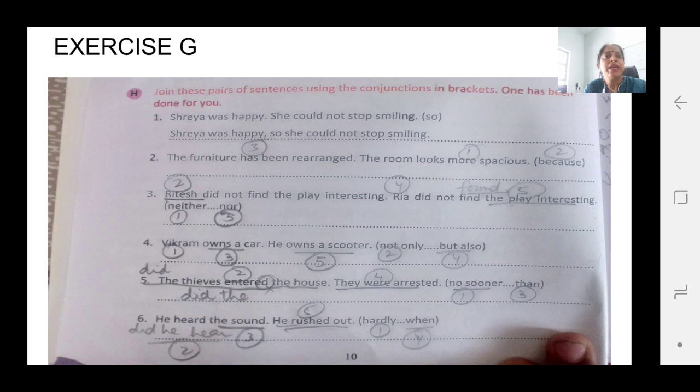Join these pairs using the conjunction in brackets. I have written numbers but after numbering you will have to put it into complete sentences and copy these sentences in the blanks. First it is done. Still I will read it out. Shreya was happy. She could not stop smiling. Bracket so.